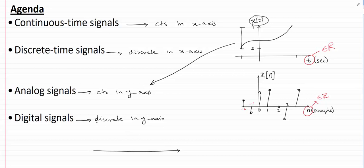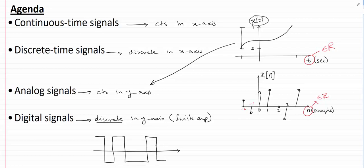As the name suggests, a digital signal is discrete in the y-axis, which means it only has a finite number of amplitude levels. Let's take an example: in this signal you only have two possible amplitude values — let's call them plus A and minus A. So this example is of a digital signal.